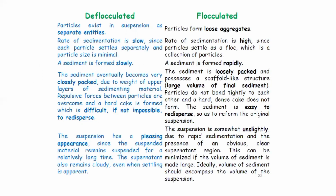In deflocculated systems, particles exist as separate entities, sedimentation is slow, and the sediment is closely packed. In flocculated systems, flocs are loose aggregates, sedimentation is rapid, and the sediment is loosely packed. The deflocculated suspension has a poor appearance due to rapid sedimentation and an obvious clear supernatant region. This can be minimized if the volume of sediment is made large — ideally the volume of sediment should encompass the entire volume of the suspension.